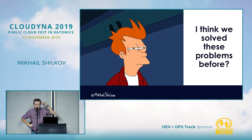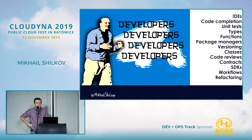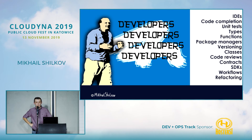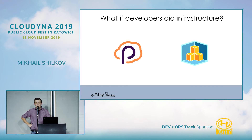When I look at all these problems, I think to myself: we solved this long time ago — it's the same list we had in developer tools in the past. Developers have great things like compilers, types, functions, IDEs, refactoring, unit tests, package managers, and so on. What if we just take those tools and try to use them for infrastructure?